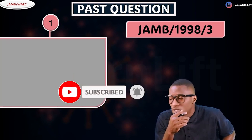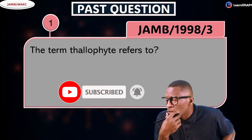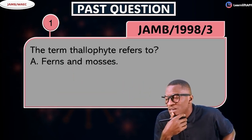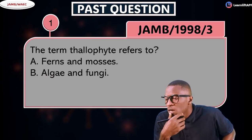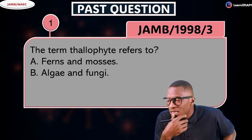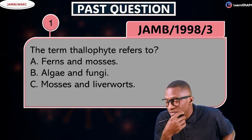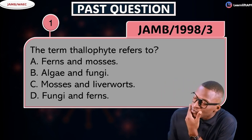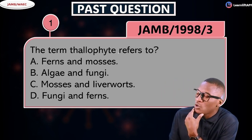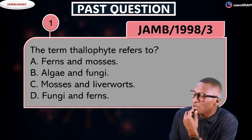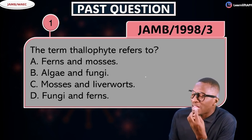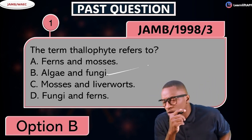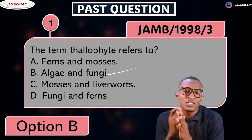Let's check a JAMB past question — 1998, question three. The question states: 'The term thallophyte refers to...' Options: A) ferns and mosses, B) algae and fungi, C) mosses and ferns, D) fungi and ferns. Of course, your thallophytes are algae and fungi, making option B the correct answer.